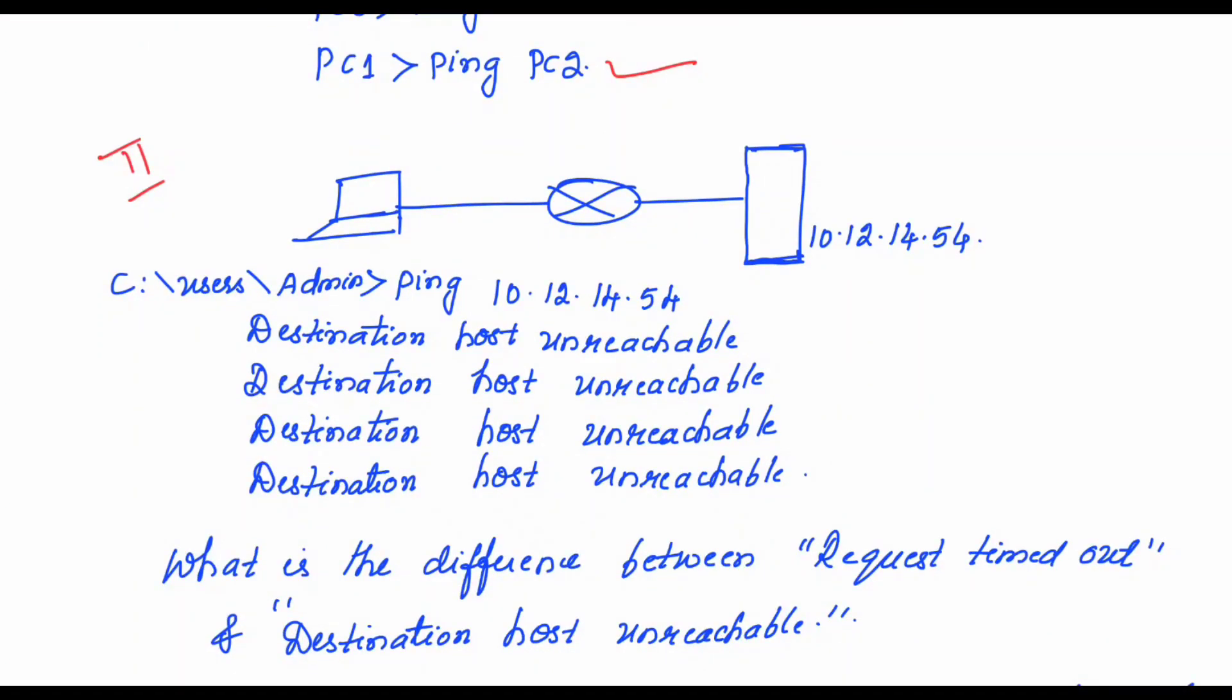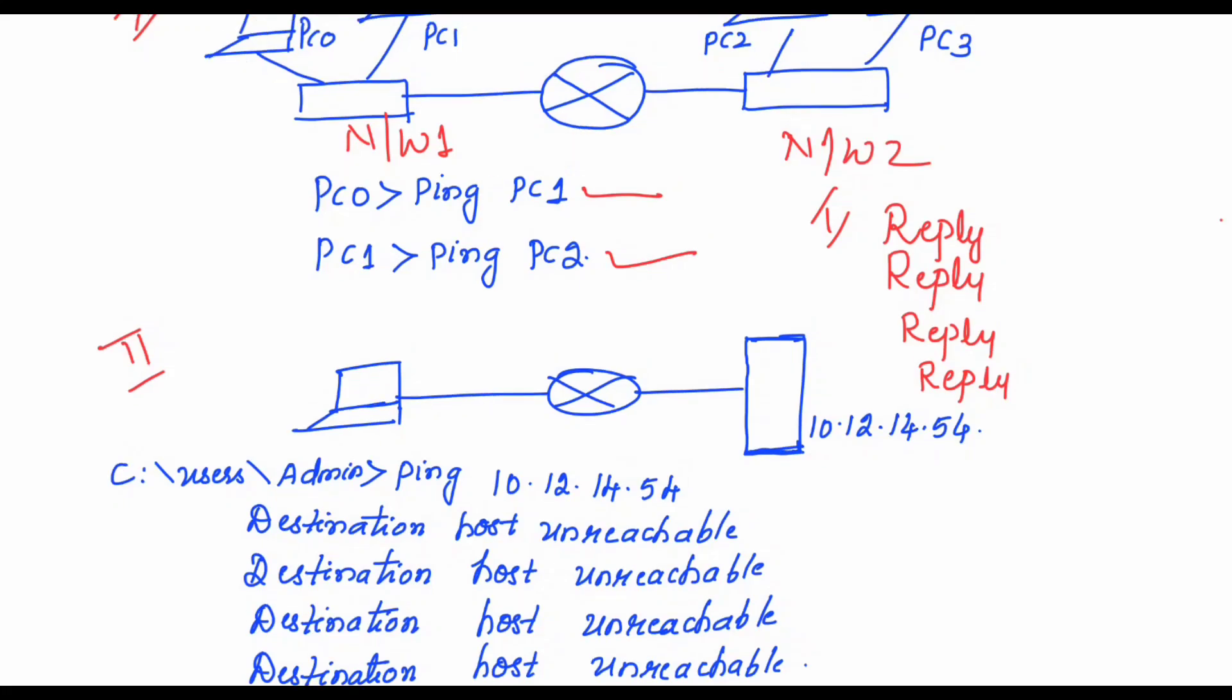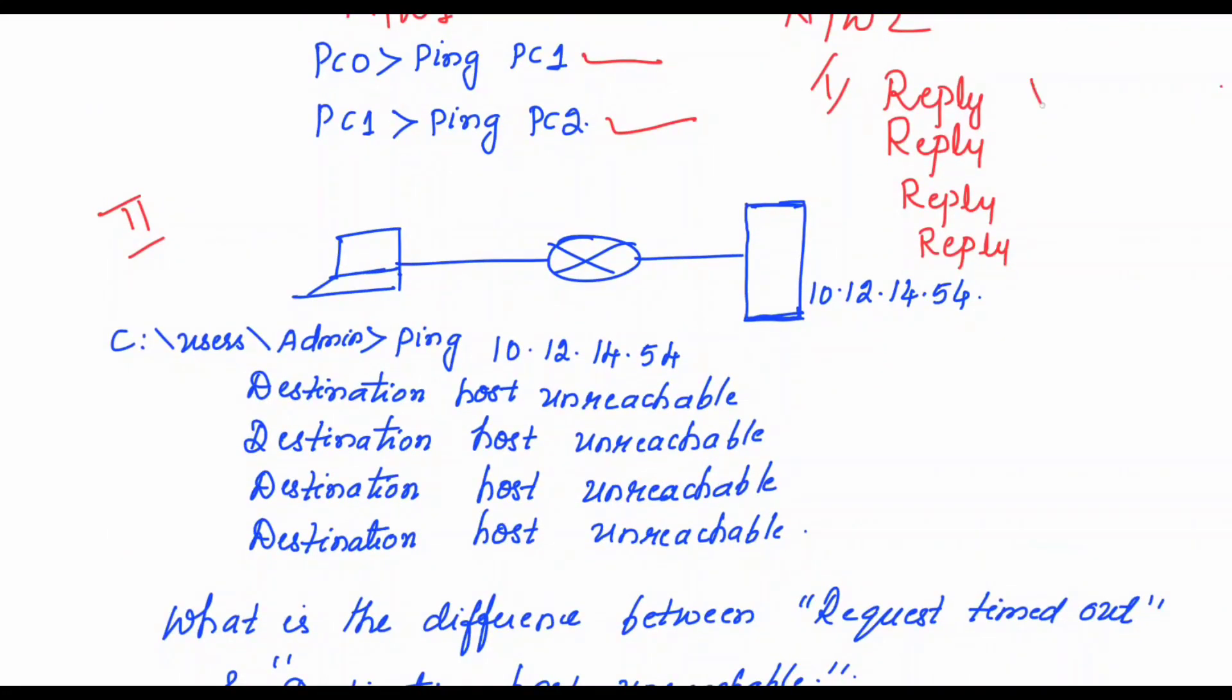Till now what we have seen is using the ping command, the first possibility is that you will be getting the reply like this: reply from the host, reply from the host. That means four times, four packets are received from the destination host. This means your connectivity is perfect and server is reachable. In the other case, you may receive an output of request timed out.